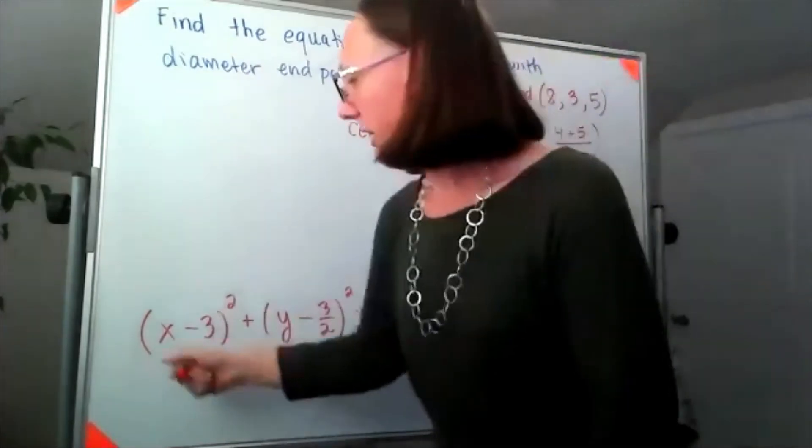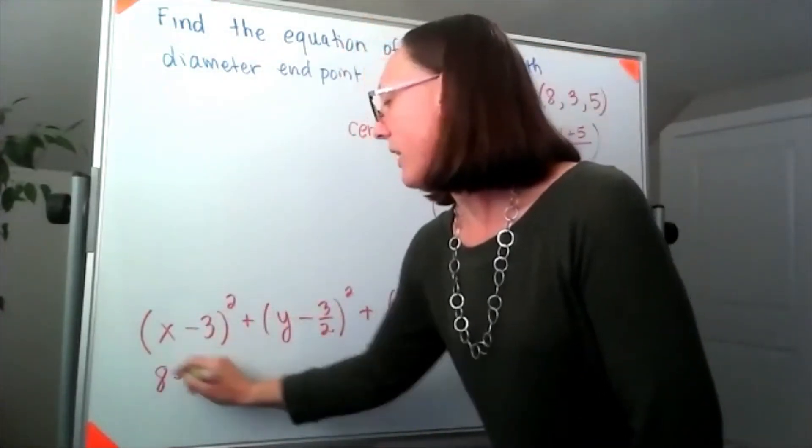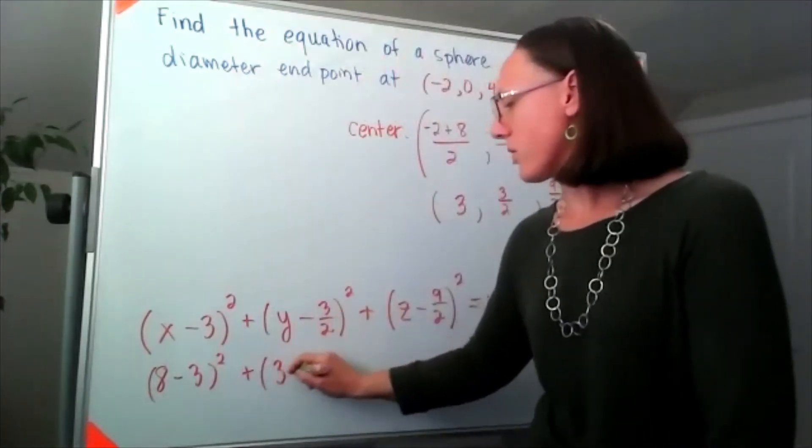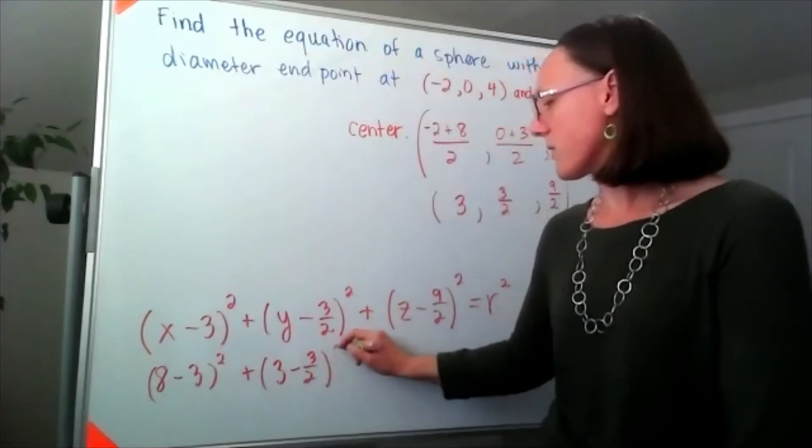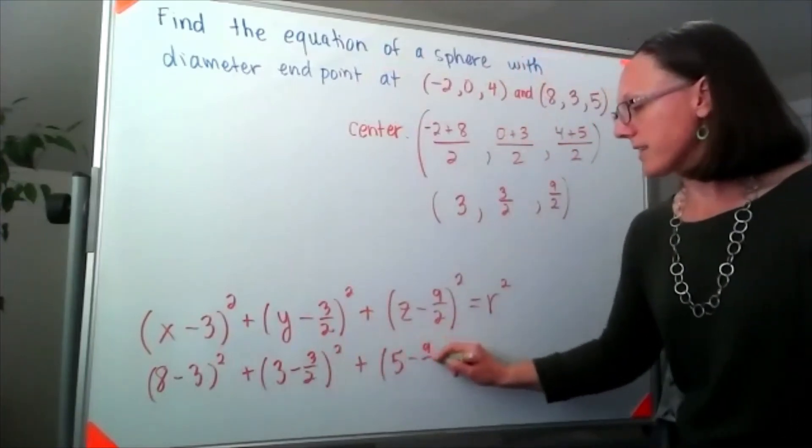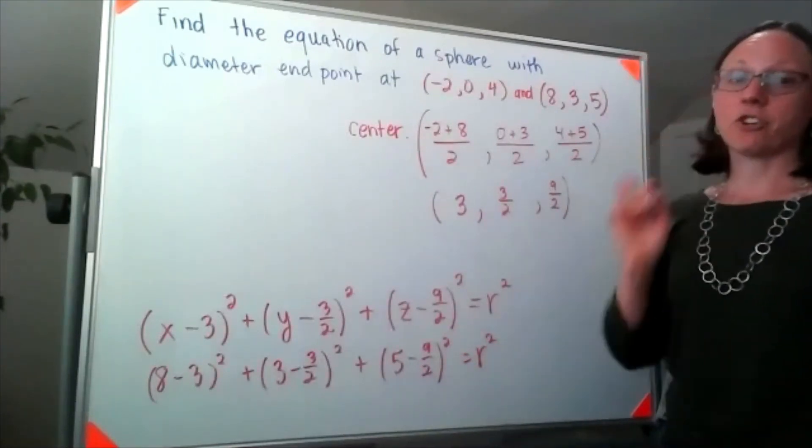So if I plug in 8 for x, then I'll have (8 minus 3) squared, 3 for y, so (3 minus 3 halves) squared, and 5 for z, (5 minus 9 halves) squared, and that is the value of r squared.